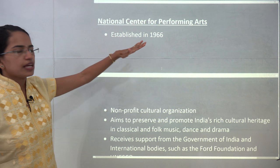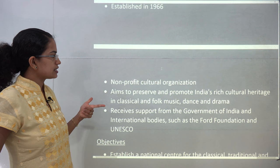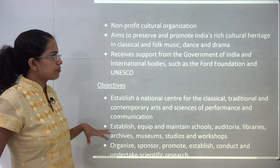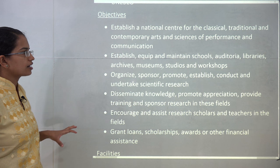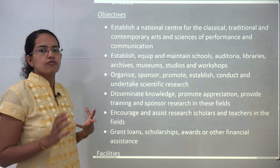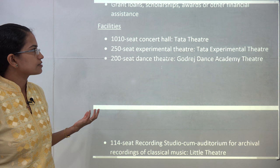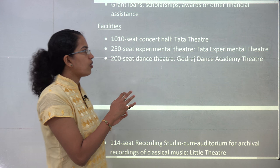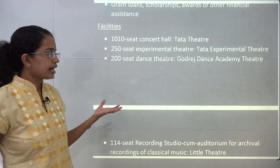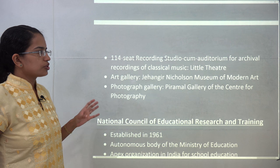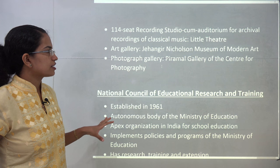The National Centre for Performing Arts was established in 1966. It is a non-profit institute that received support from the Government of India, Ford Foundation, and UNESCO. The idea is to develop classical, traditional, and contemporary art forms; develop schools, libraries, and archives for cultural promotion; build scientific organizations; and grant scholarships and awards for cultural expertise. Its facilities include a concert hall known as Tata Theatre, an experimental hall known as Tata Experimental Theatre, a dance theatre under the name Godrej Dance Academy, a recording studio as Little Theatre, an art gallery as the Jahangir Nicholson Museum of Modern Art, and a photographic gallery as the Piramal Gallery of Photography.